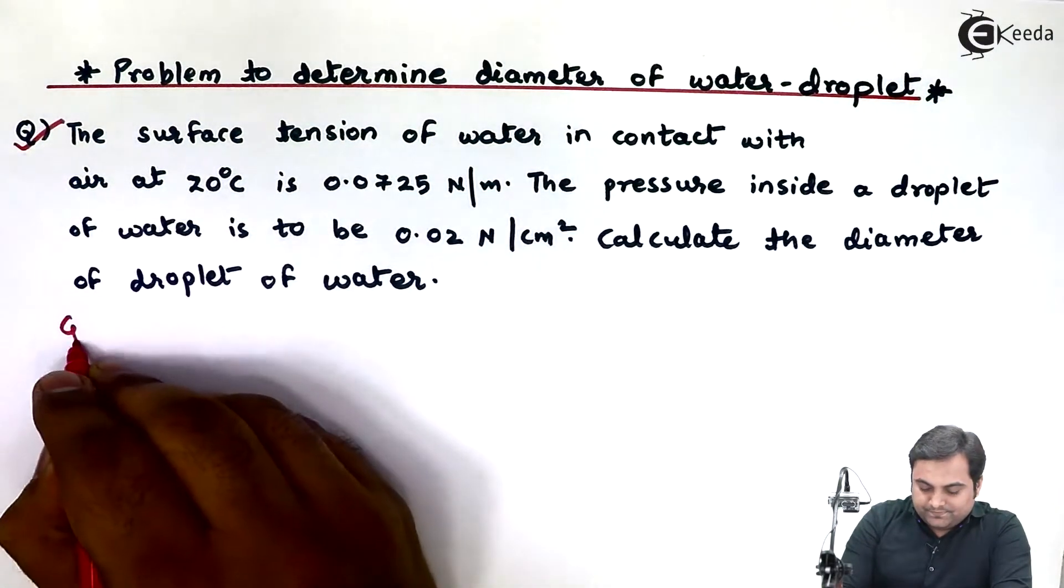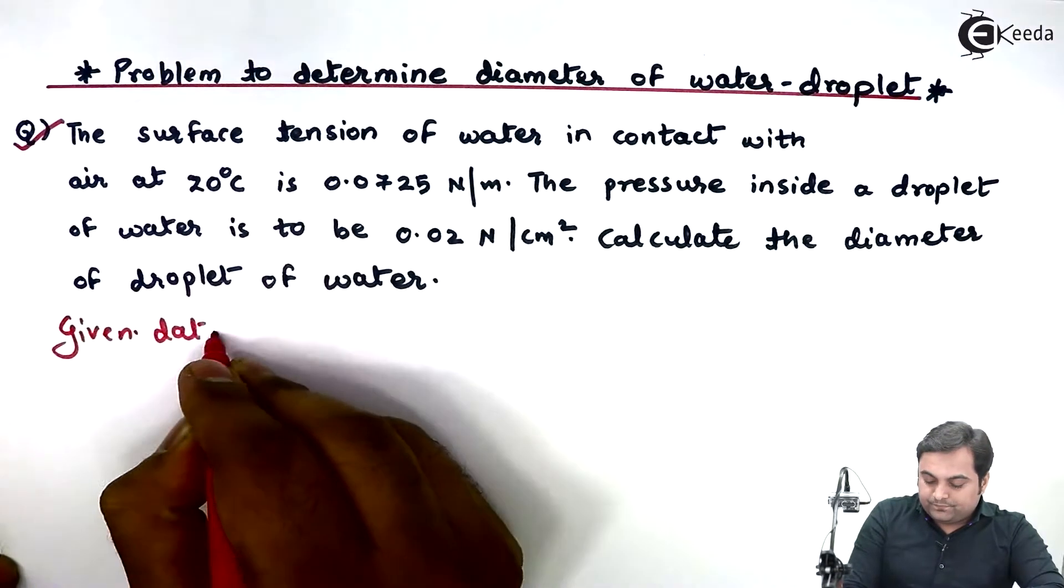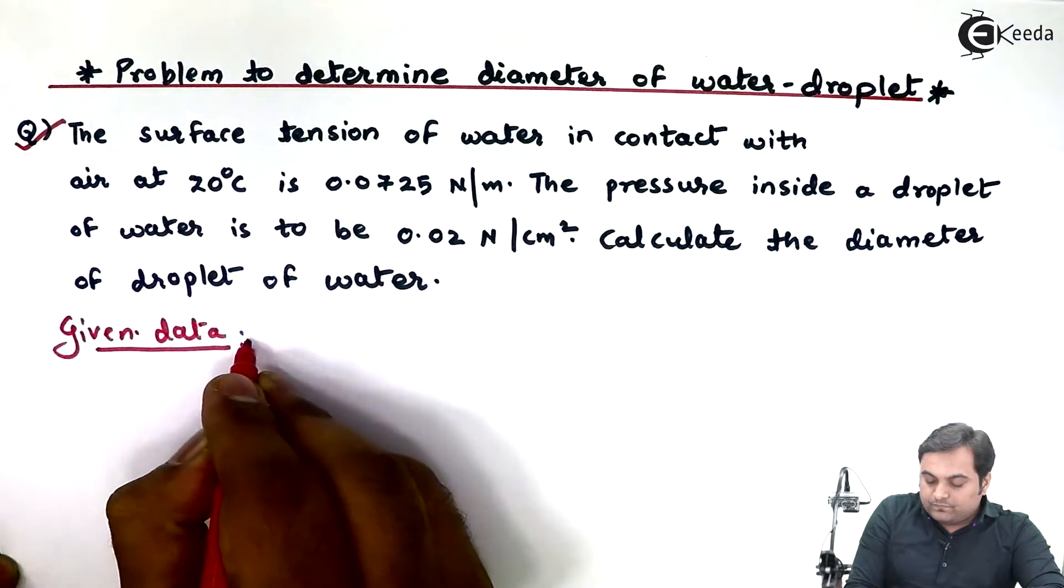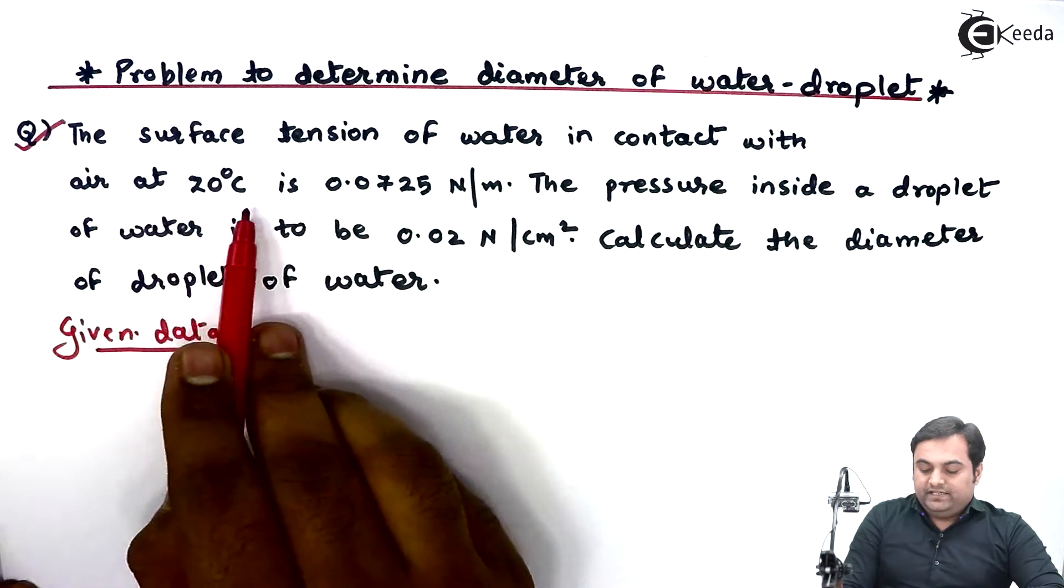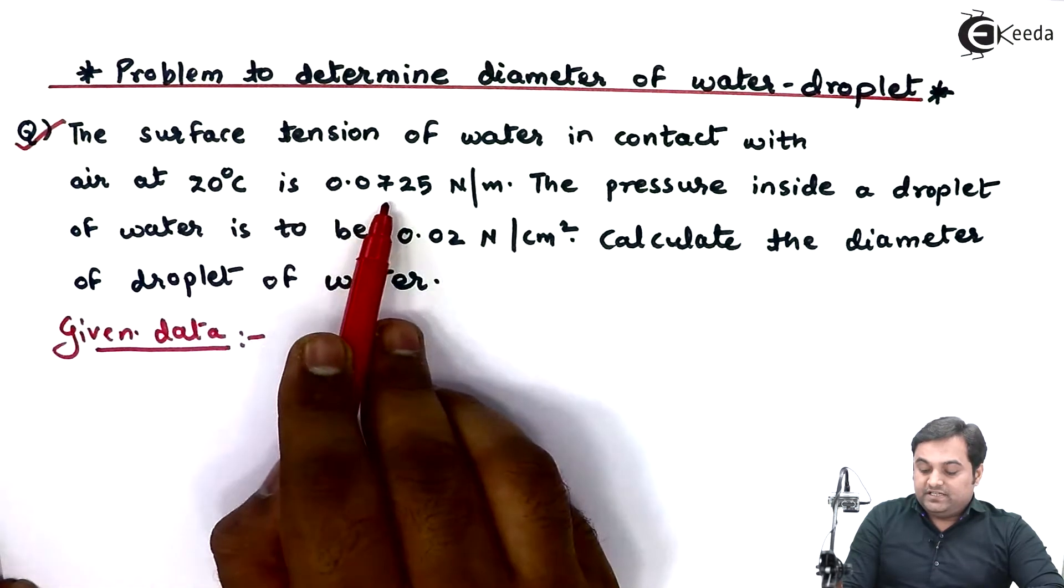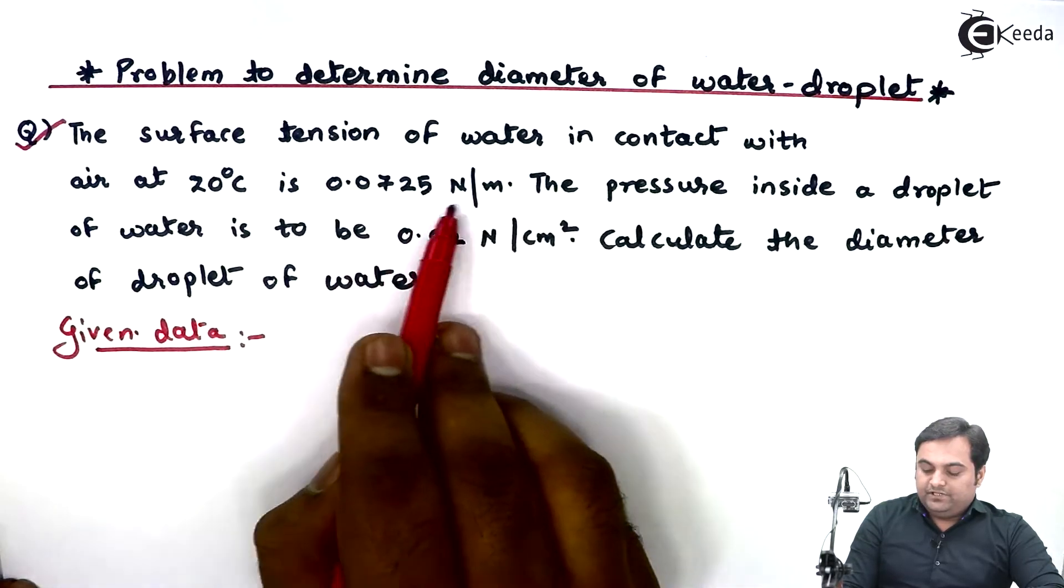In given data: The surface tension of water in contact with air at 20 degrees Celsius is 0.0725 Newton per meter.